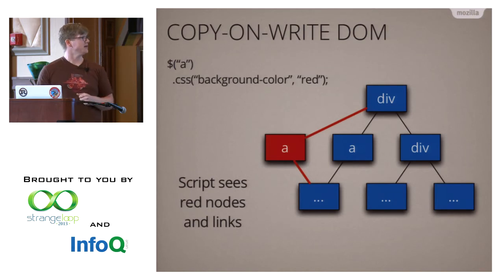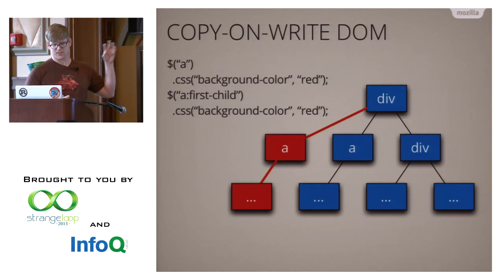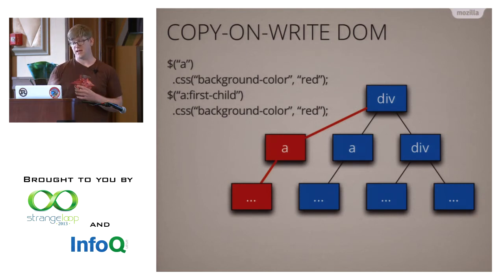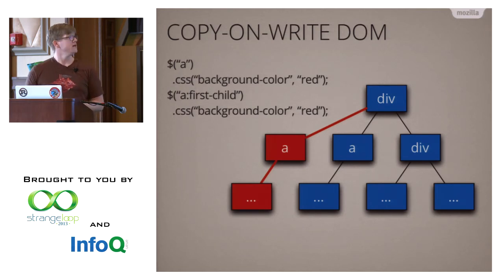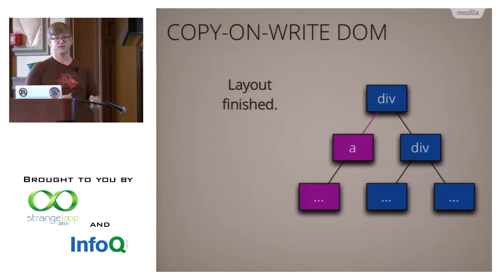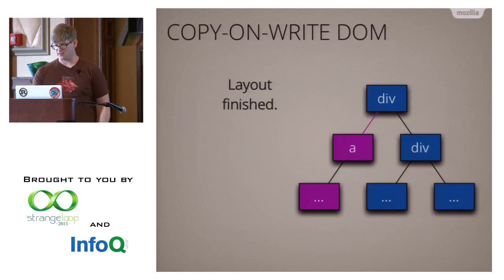If we keep going — changing the child of that node — we copy that node too, and update the pointers. So there's an extra version of the tree hanging off to the side. This keeps going for as many changes as script needs to make. At the end, once layout has completed running, before it starts the next version of layout, we remove the old nodes and copy all the values from the dirty pointers to the clean pointers — giving us a new version of the tree. This becomes the new immutable version of the tree that layout will see, and script can go off and do its thing again.